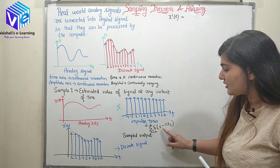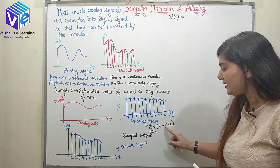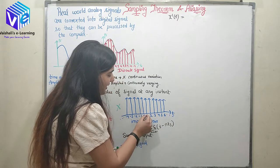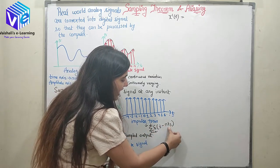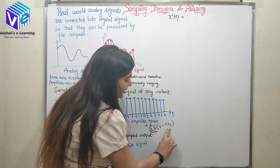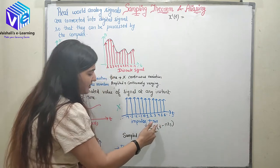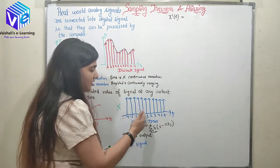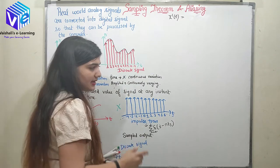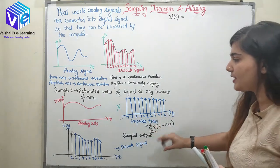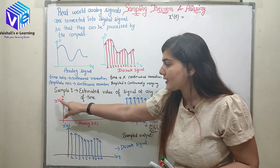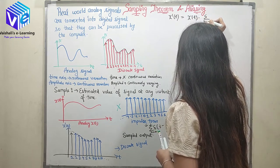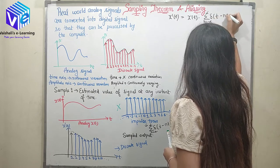Let us put n equals 0: when I put n equals 0 I will get delta(T). When I put n equals 1 I will get delta(T minus Ts). So delta(T) represents the impulse at 0, and delta(T minus Ts) represents the shifted version of delta shifted at Ts. Similarly, shifted versions at 2Ts, 3Ts and so on. I can also shift this delta in the negative direction — when I put n equals minus 1, I will get delta(T plus Ts), which represents the impulse at minus Ts.